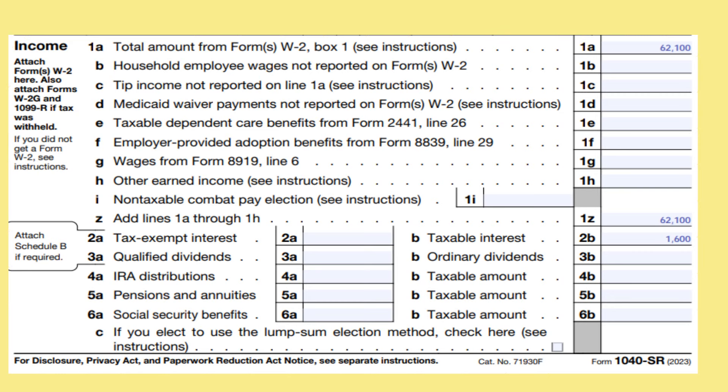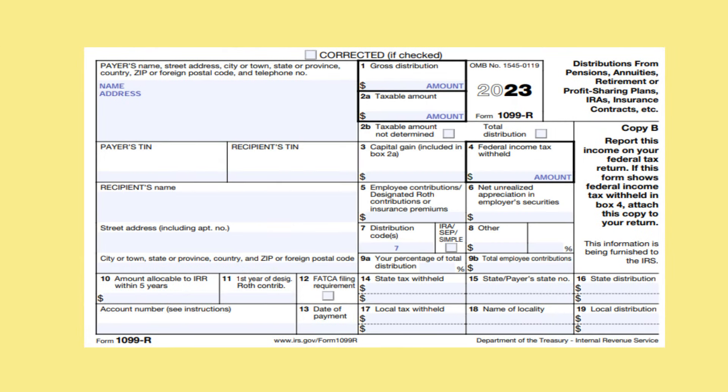On line 3A, put any qualified dividends that you received, and on line 3B, any ordinary dividends received. You would have had this reported to you on Form 1099-DIV. On line 4A, put any IRA distributions that you received and any taxable amount on line 4B. On line 5A, put any pensions that you received and the taxable portion on line 5B. You would have received the information on Form 1099-R.